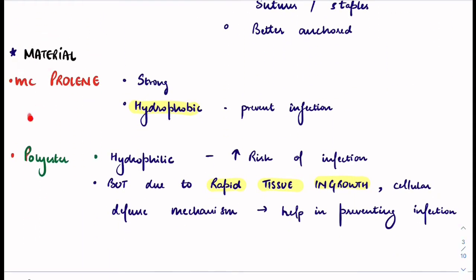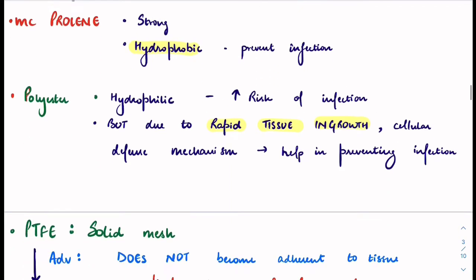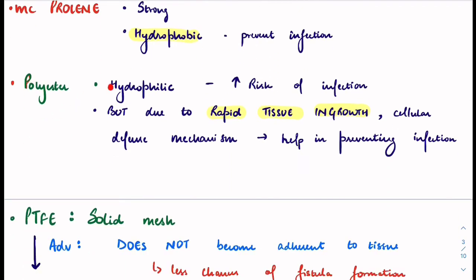Regarding mesh materials: prolene is the most common — it is strong and hydrophobic, meaning it repels water and helps prevent infection. Polyester is hydrophilic, which increases infection risk, but its advantage is rapid tissue ingrowth, and the cellular defense mechanisms help prevent infection.